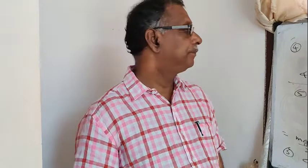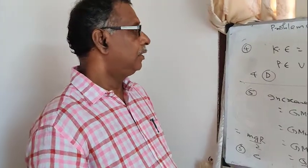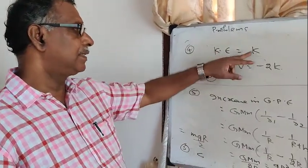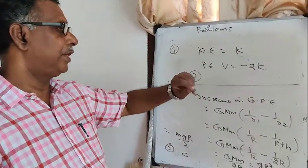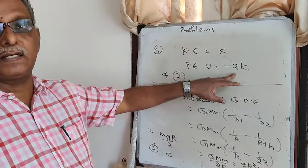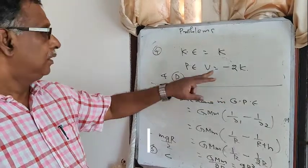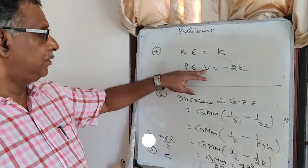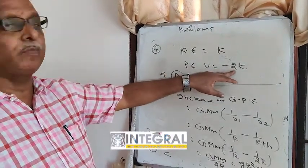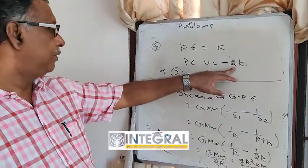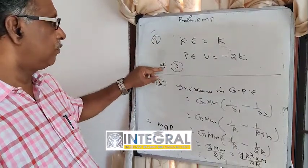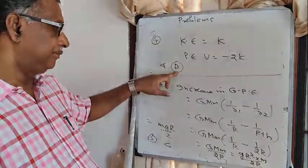Question 4: Using the standard result that if KE = K, then PE = −2K. Here, potential energy V = −2K. The answer is D.